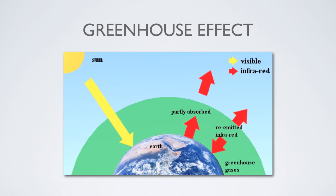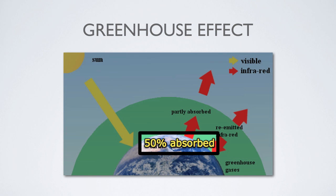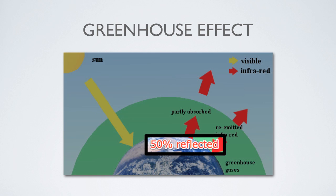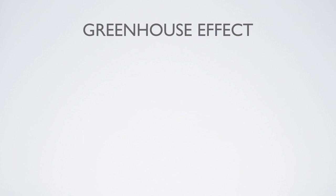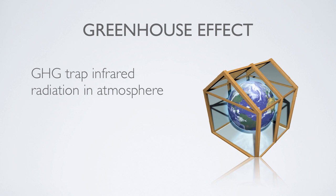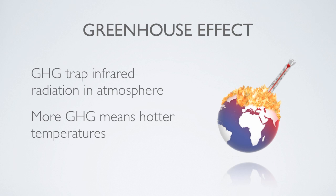The greenhouse effect. As you probably already know, the Earth receives energy from the Sun in the form of solar radiation. About 50% of that radiation is absorbed at the Earth's surface. The remaining 50% is reflected back into the atmosphere in the form of infrared radiation, or heat. The greenhouse gases discussed in the previous lesson trap this outgoing infrared radiation in the atmosphere, thereby heating the Earth. Therefore, the more GHGs are present in the atmosphere, the warmer the Earth becomes. This process is known as the greenhouse effect.